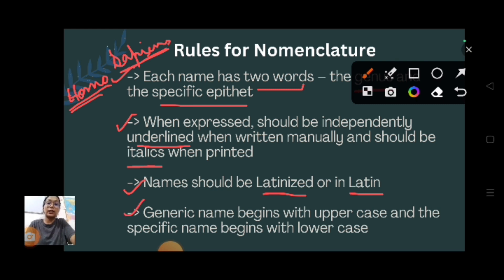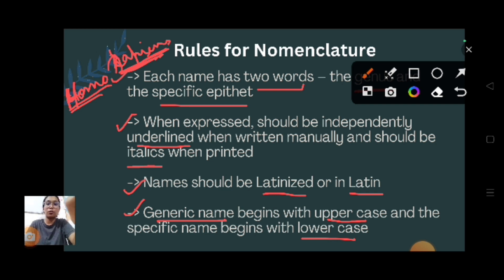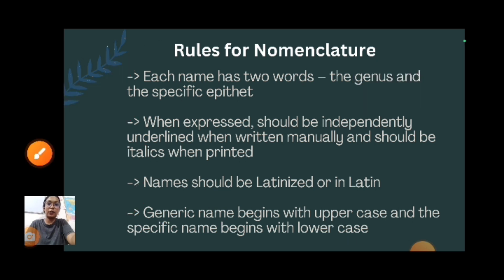The generic name begins with an uppercase letter - the first name should be initiated with a capital letter. The second name, the specific epithet, should begin with a lowercase letter. The species name should start with a small letter. So the first part is capitalized and the second part starts with a small letter.